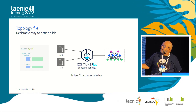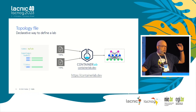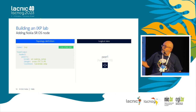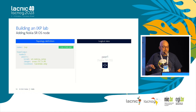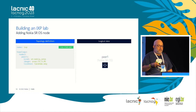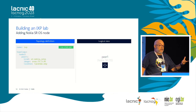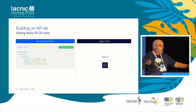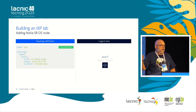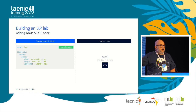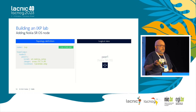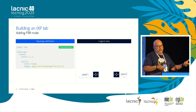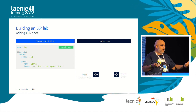To create this specific lab, we first give the file a name — in this case, 'my lab' — and then define the topology. We start with the nodes. The first node we'll call peer one. We define what kind of node it is — in this case, a Nokia SROS. We define the image. Another advantage is that you can use different images at the same time with Container Lab. If you need a license, you can declare it inside this file. Having done that, this automatically deploys peer one and peer two.